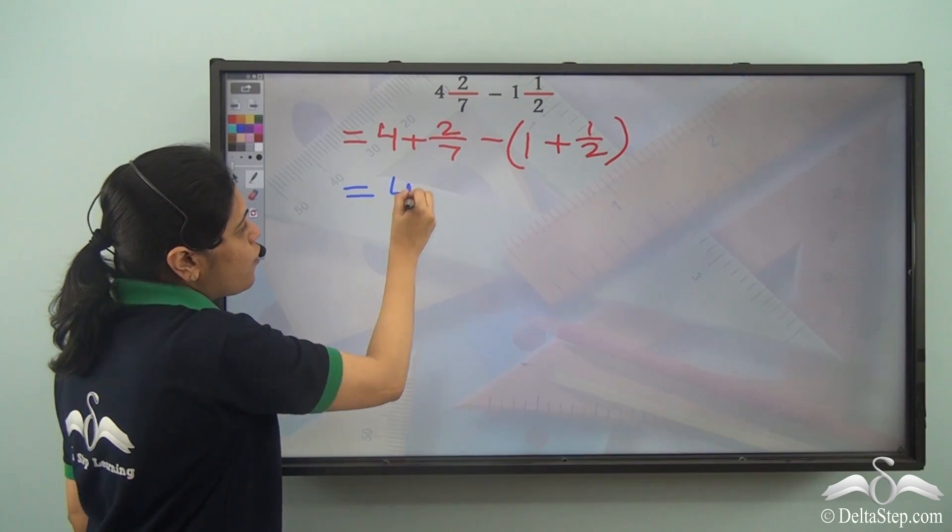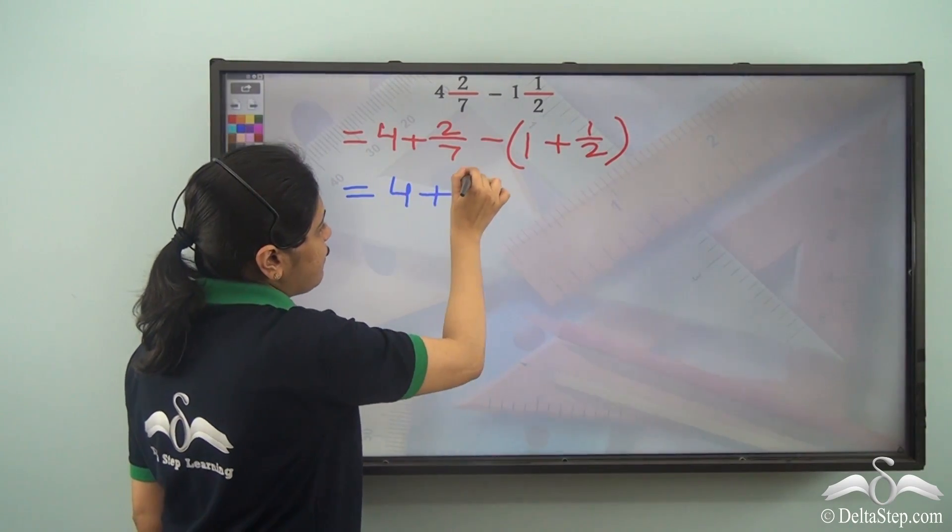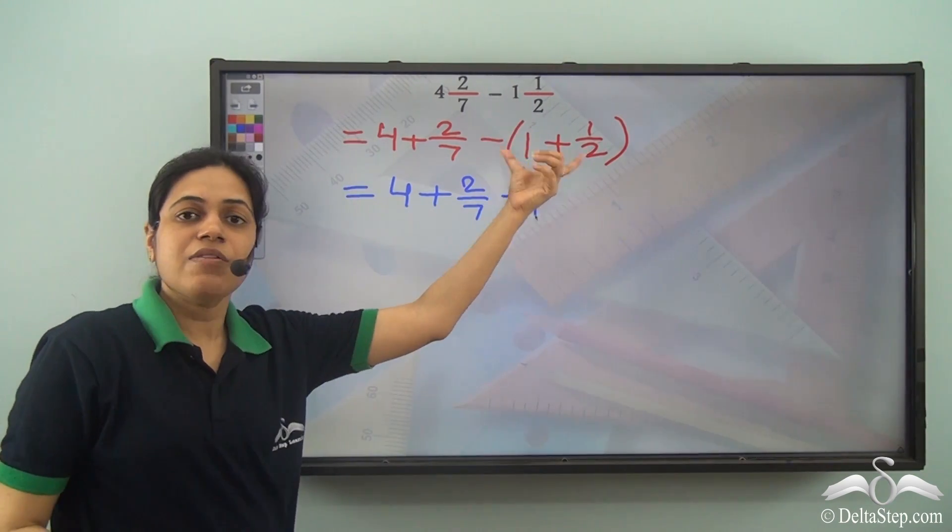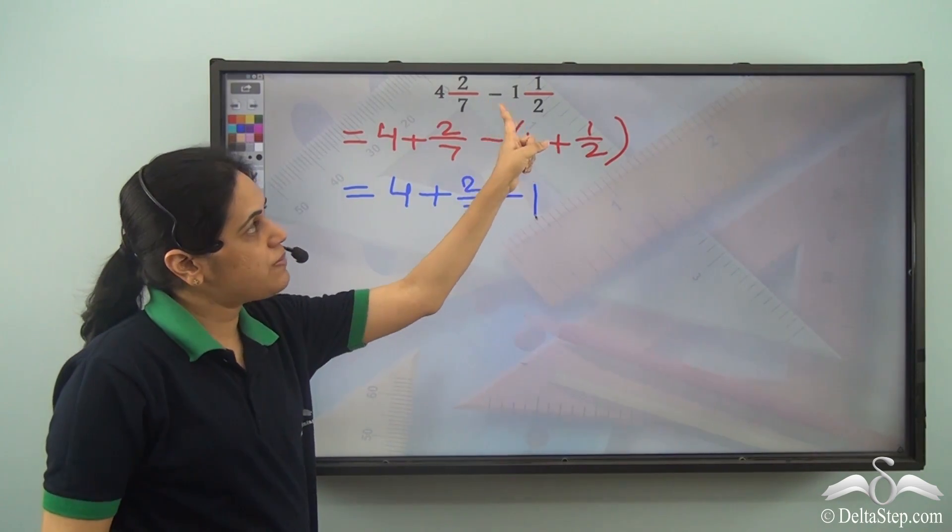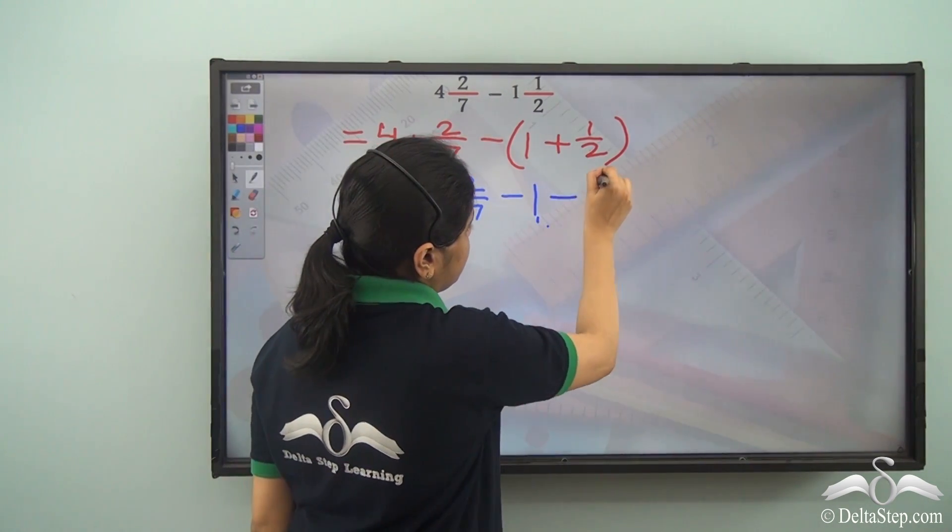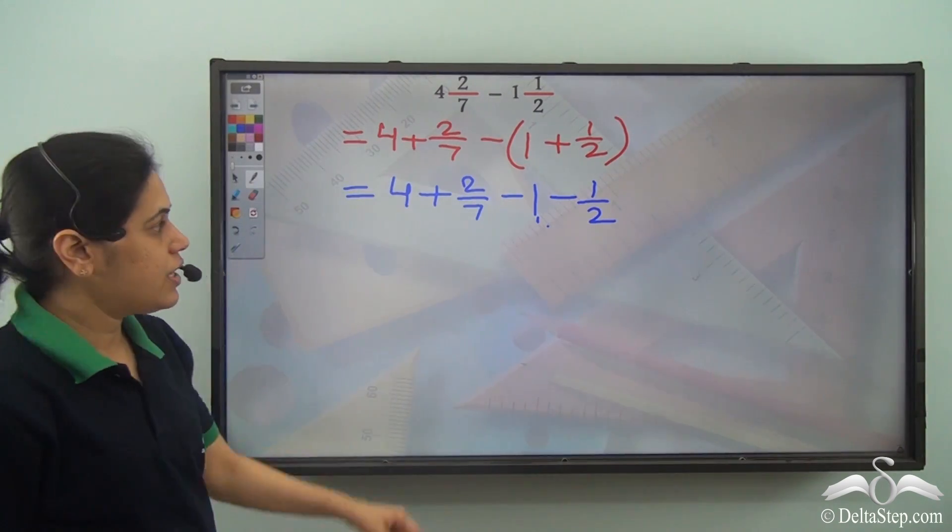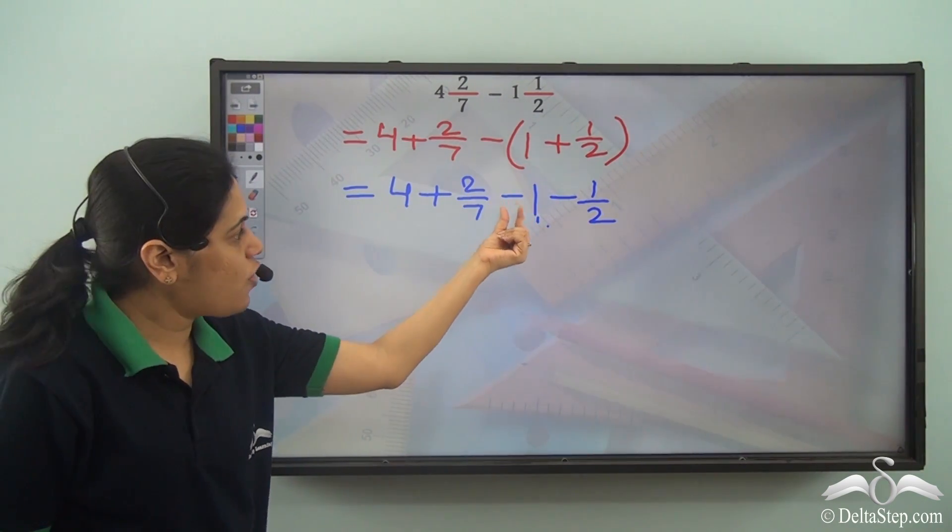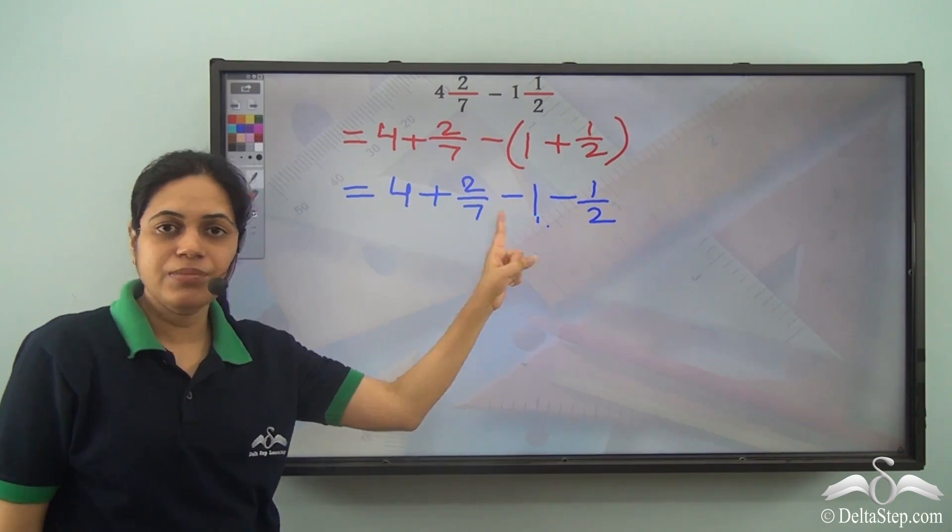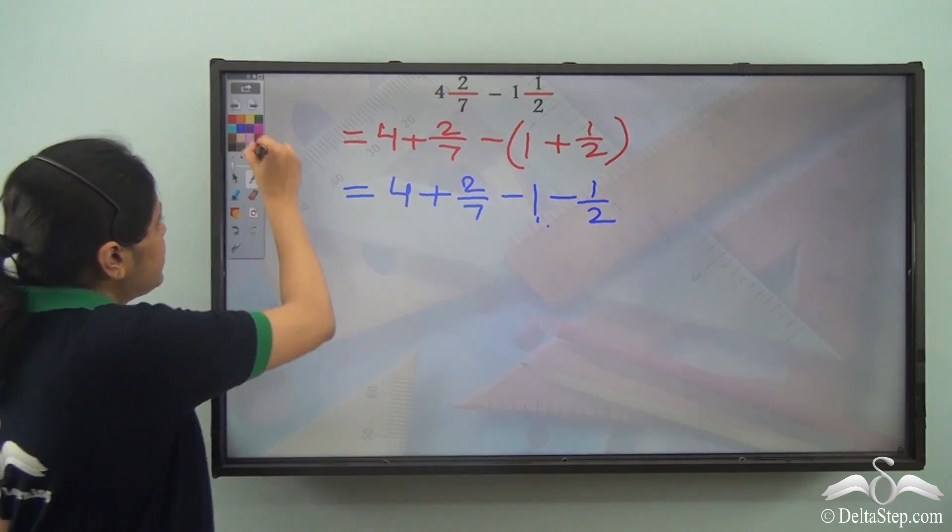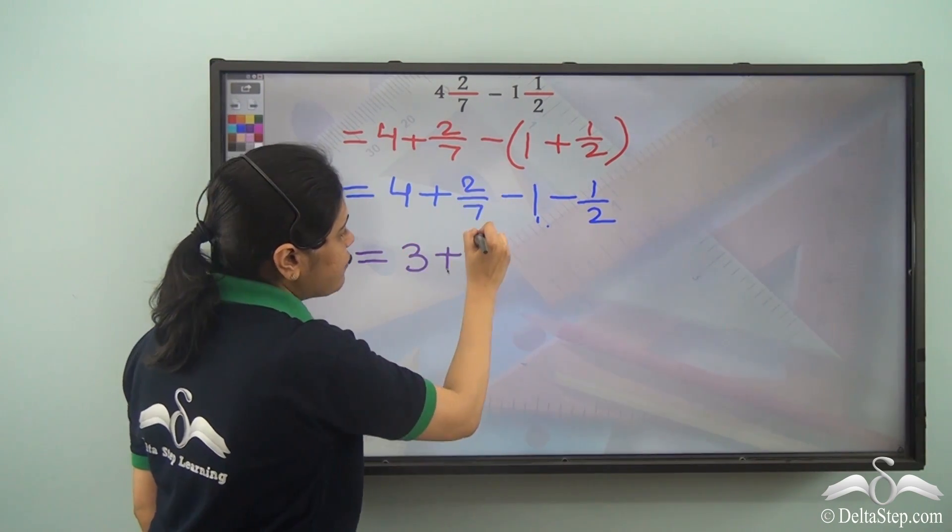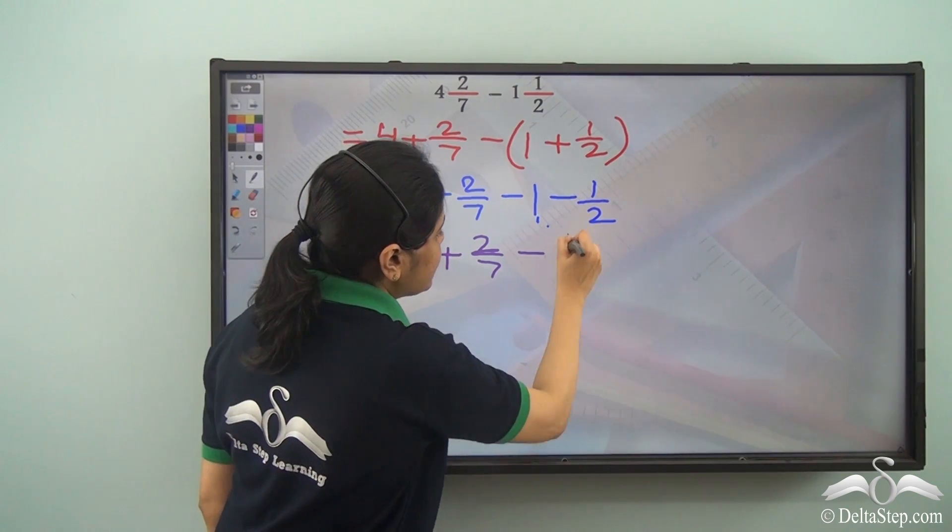So this gives us 4 plus 2 by 7 minus 1 since this is 1 entire number. So I need to subtract 1 1 by 2. So this is minus 1 minus 1 by 2. Now what is 4 minus 1? I need to consider the sign before 1. 4 minus 1 is 3 and I have 2 by 7 minus 1 by 2.